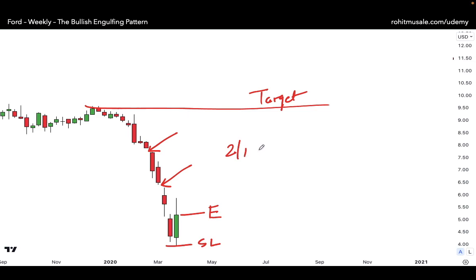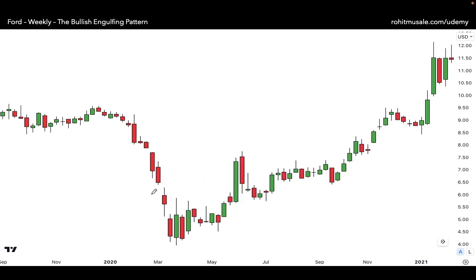Assuming those two windows were not there, then this would be your target for a nice three is to one reward to risk trade. So windows are a big problem because falling windows become resistance. That would be the way you take this trade. Now in this case, although you had these windows, the price action was so powerful that all of those windows were broken and even that target was achieved.